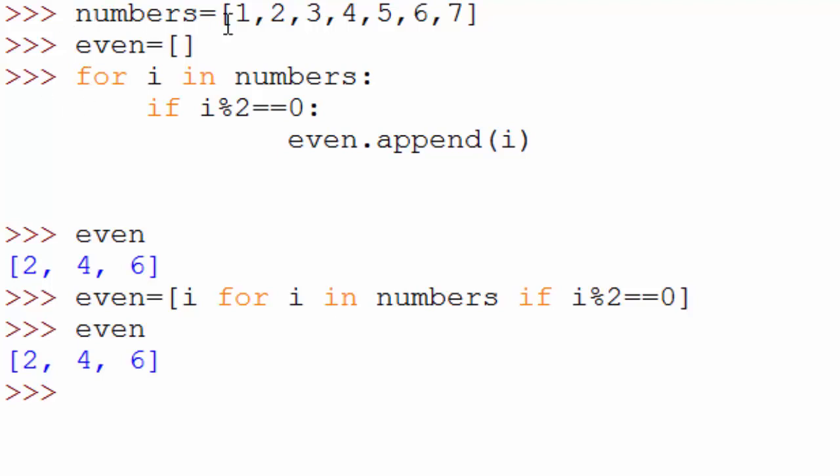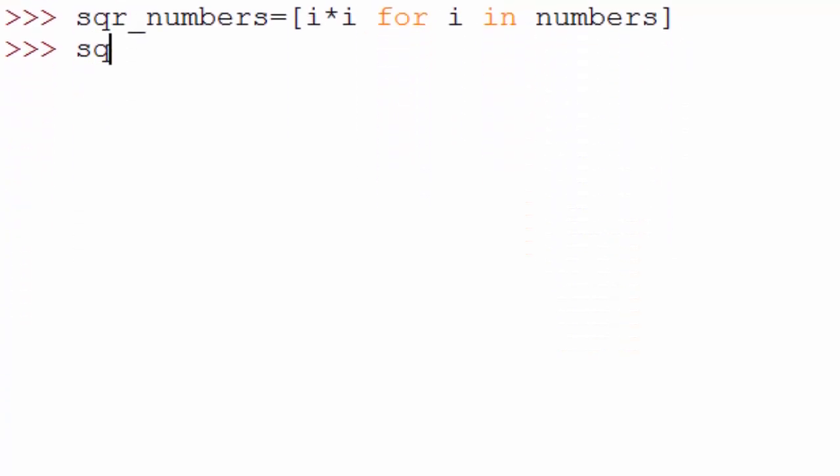What if you want to generate square of all these numbers? You can do that by doing this. You can say i times i for i in numbers. So here I don't have any if condition and I'm just iterating to the list and generating a new list which is a square of original numbers. So 1, 2 square is 4, 3 square is 9 and so on.